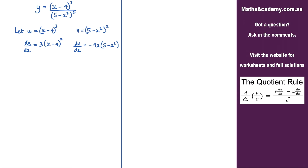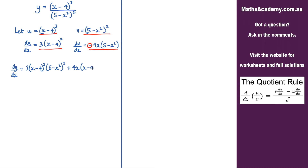We can now go ahead and apply the quotient rule to find dy by dx. So dy by dx equals v du/dx, giving us 3(x minus 4) squared multiplied by (5 minus x squared) all squared, minus u dv/dx. We have two negatives so that becomes plus 4x times (x minus 4) cubed times (5 minus x squared). That is all over v squared, where v is (5 minus x squared) all squared, so v squared is (5 minus x squared) to the power of 4.